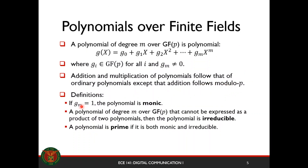Some definitions: if g_m is equal to 1, we call that a monic polynomial. A polynomial of degree m over GF(p) that cannot be expressed as a product of two polynomials, we call irreducible — basically, if you cannot factor the polynomial, it's irreducible. And finally, a polynomial is prime if it is both monic and irreducible. This prime polynomial is the basis for all our different channel coding schemes that you will see in succeeding lectures.